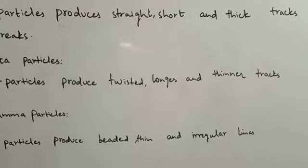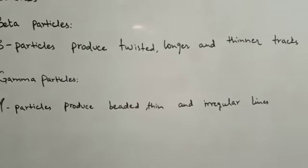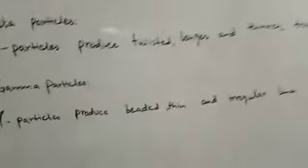Beta is twisted, longer and thinner. Gamma is thin and irregular.